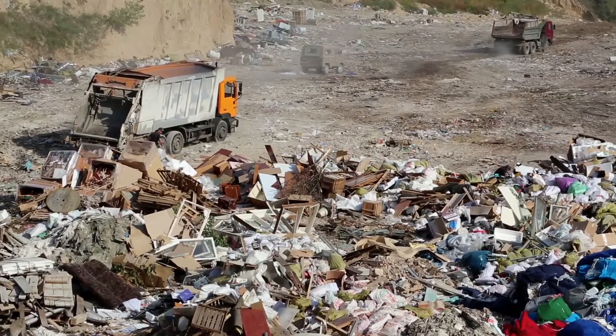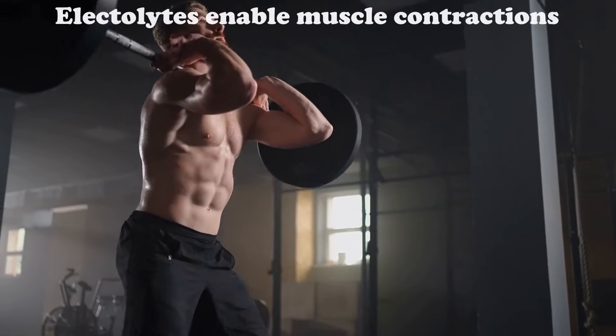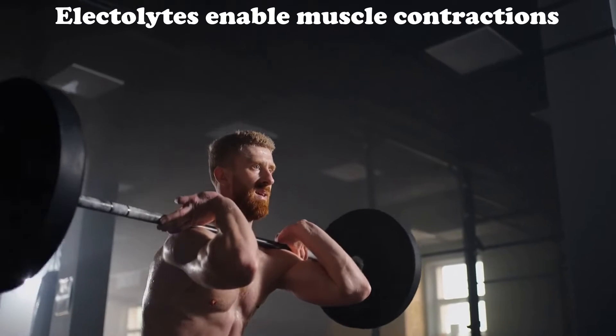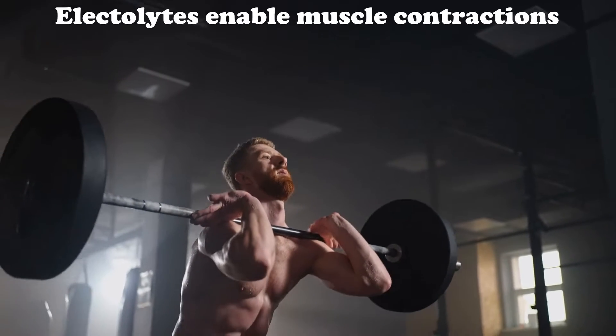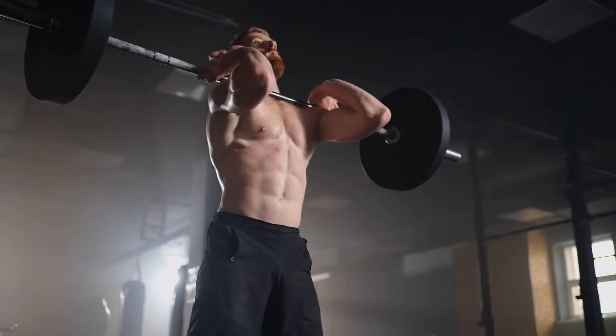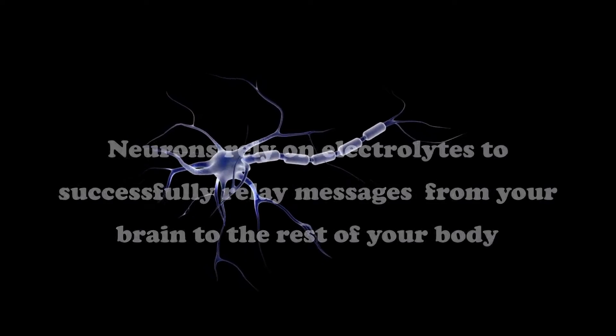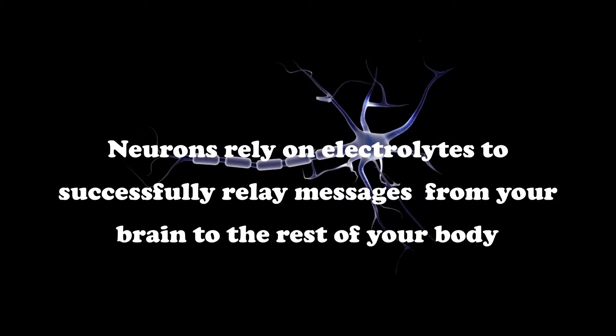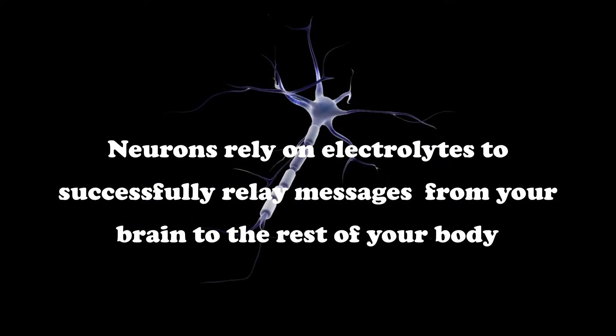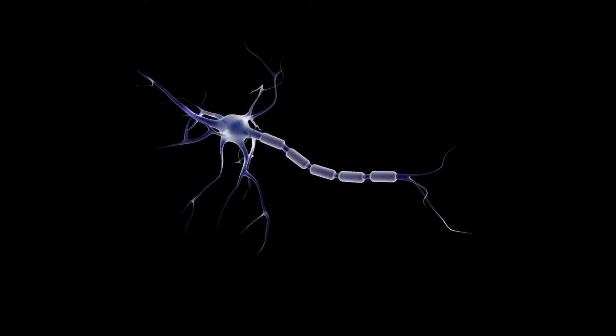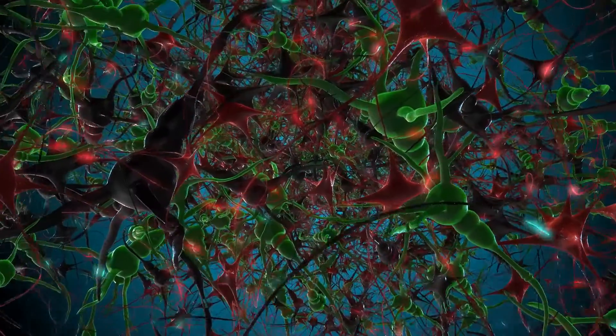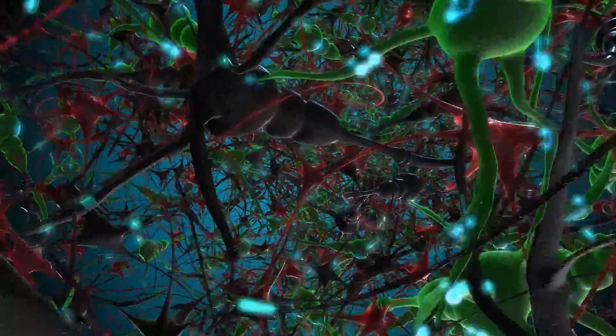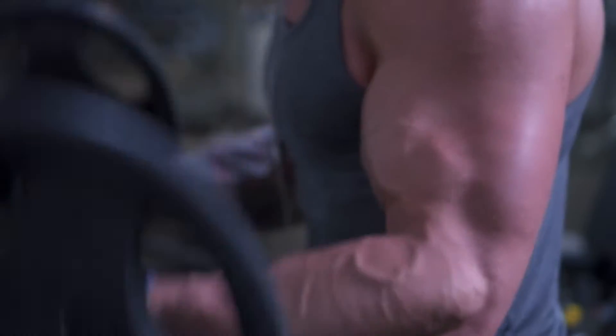Electrolytes are also vital for muscle contractions because they enable your brain to send signals through your nervous system to different muscles throughout your body. Resting cells carry a negative charge on the inside and a more positive charge on the outside. When your brain is telling your bicep to contract, the electrolyte ions travel in and out of cells turning their negative charge to a positive charge and it forms a chain reaction through your neurons all the way down to your bicep. Once this signal reaches your bicep, the neurons flood the muscle tissue with calcium ions causing the muscle to contract.